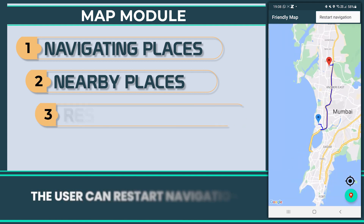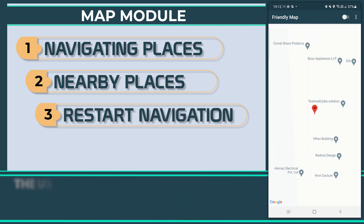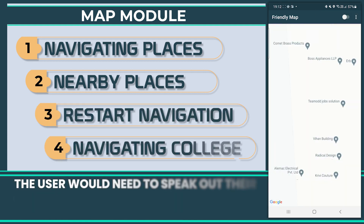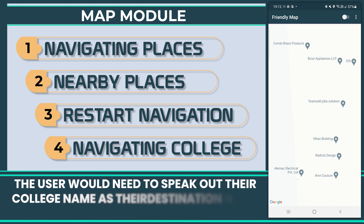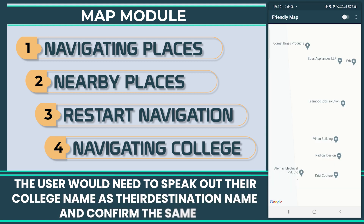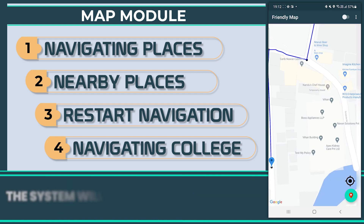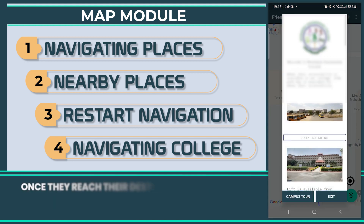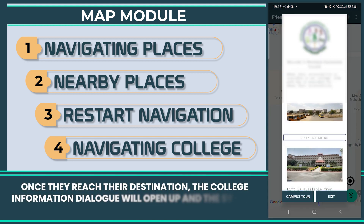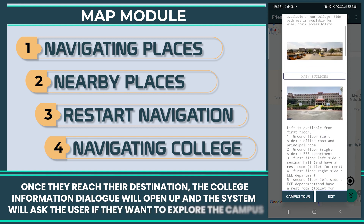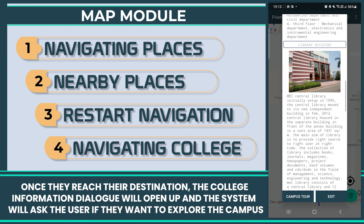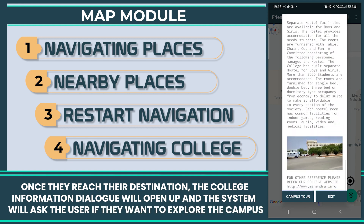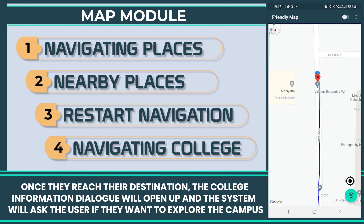The user can restart navigation. The user would need to speak out their college name as their destination and confirm the same. The system will plot the destination on the map. Once they reach their destination, the college information dialogue will open up and the system will ask the user if they want to explore the campus.